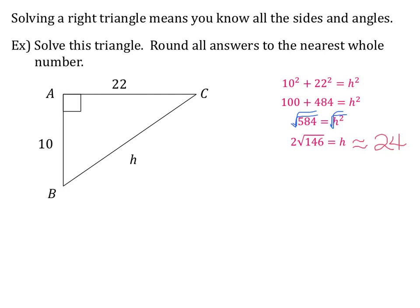To fully solve the right triangle we need the angle measures, so we'll use inverse trig functions. I'll pick angle C and label the sides relative to it: 10 is opposite, 22 is adjacent, and our hypotenuse is 24. I'd suggest using the tangent inverse function to find angle C. Go ahead and do this on your own and we will finish the problem together in class.